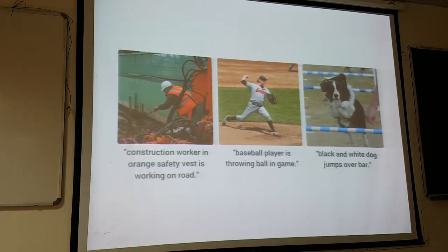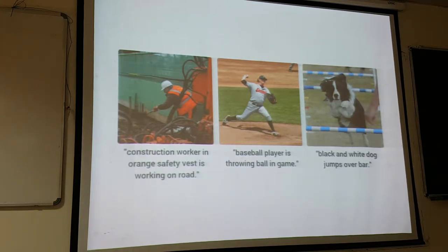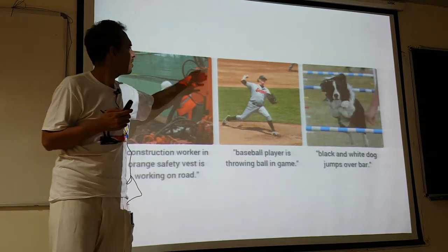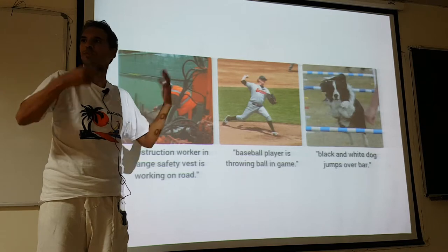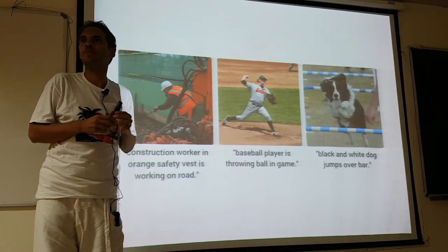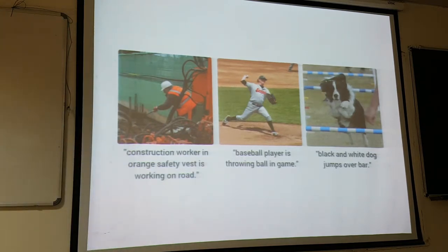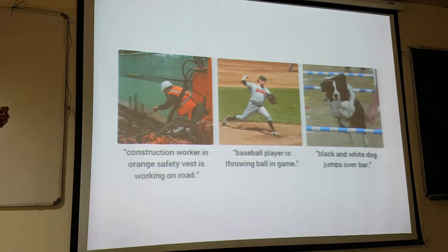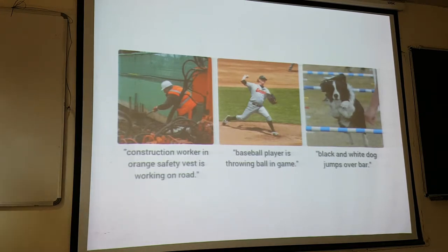There are details not in the caption but present in the picture — that's based on training data. For example, if it's a baseball player who always has grass in the training data, it will create grass. That's biased. You can mitigate that with more diverse training data.